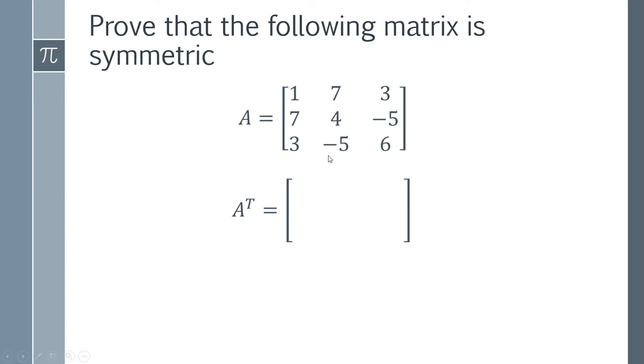So this row here is going to become a column here, this row here is going to become this column, and this row here is going to become this column. You've simply swapped the rows and made them columns.